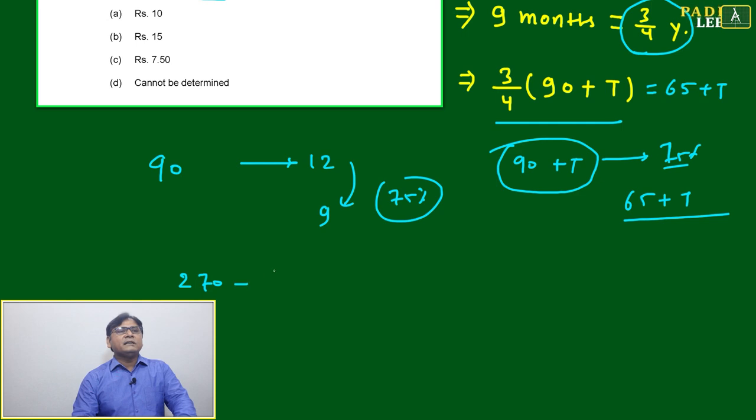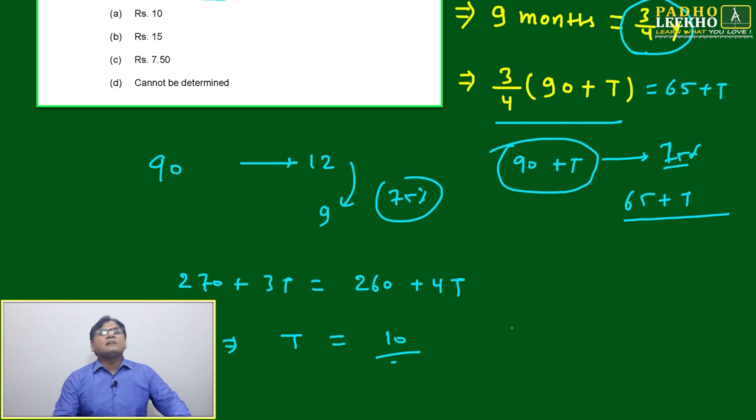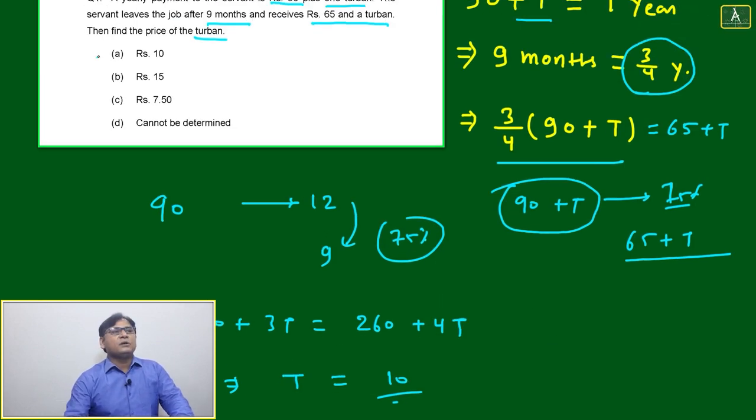That is 270 plus 3T equal to 65 into 4. It will be 260 plus 4T, means just to do one extra step, it will become 10. Means turban cost is 10 rupees. Then you can mark here.